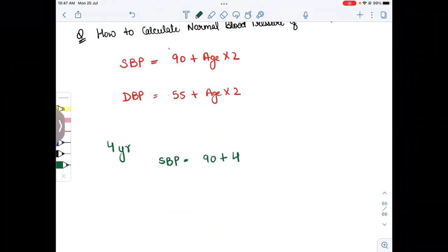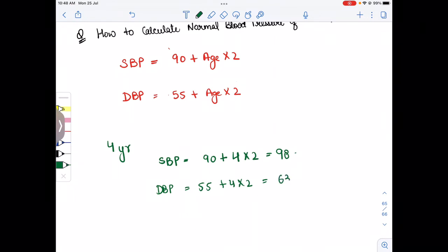So 90 plus 8 is 98, and for the diastolic blood pressure 55 plus age is 4 years into 2, so 55 plus 8 is 63.